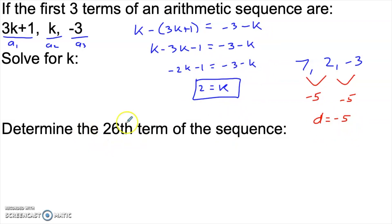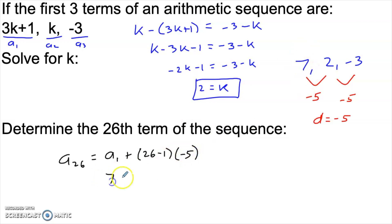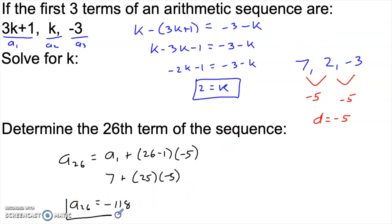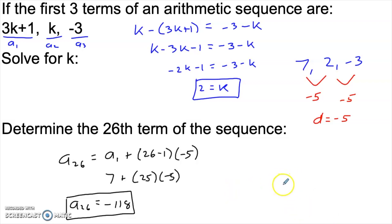Once we know the common difference, we can find the 26th term using the general formula. A sub 26 equals a sub one plus 26 minus one times the common difference of negative 5. A sub one is 7, plus 25 times negative five, giving us a 26th term of negative 118. Just because an arithmetic sequence is achieved by adding a common difference doesn't mean the terms will always be positive — if the difference is negative, the terms decrease.